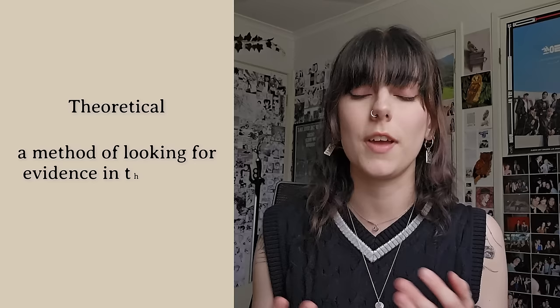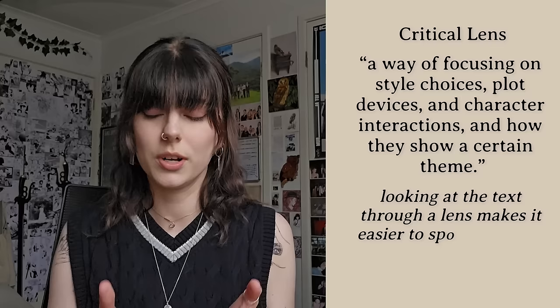Finally we have the theoretical argument. This is the kind of argument that I use and talk about most often. It looks for evidence in the text to support specific theories and the best way to look for evidence of these theories is by viewing the text through a specific lens. The definition of a critical lens is a way of focusing on style choices, plot devices and character interactions and how they show a certain theme — which is just a fancy way to say that when you look at the text through a lens you'll be able to pick up on the very specific pieces of evidence that align with the theme you're interested in.